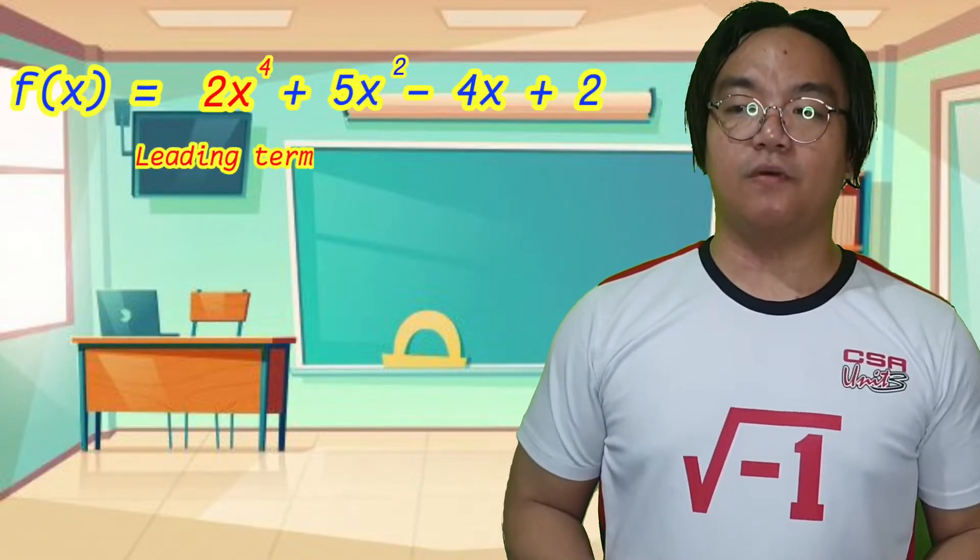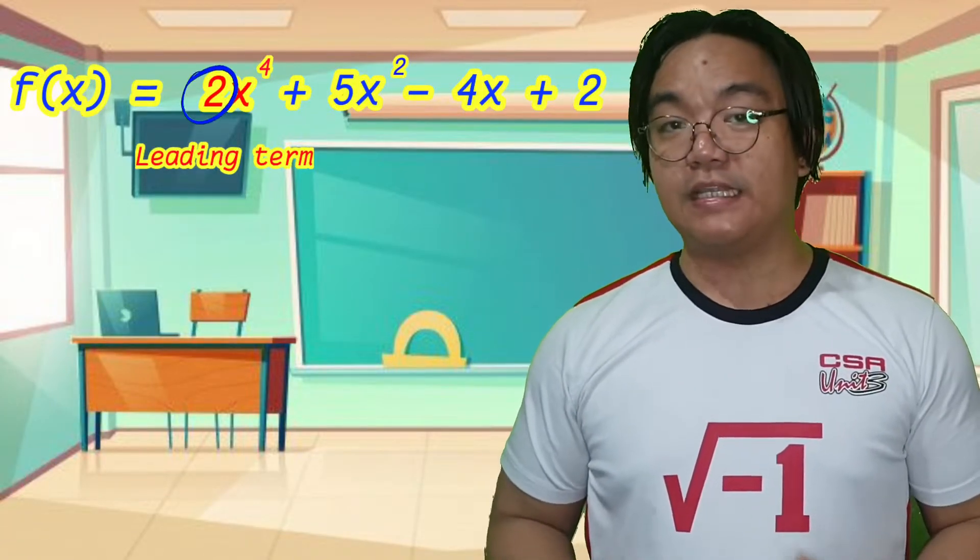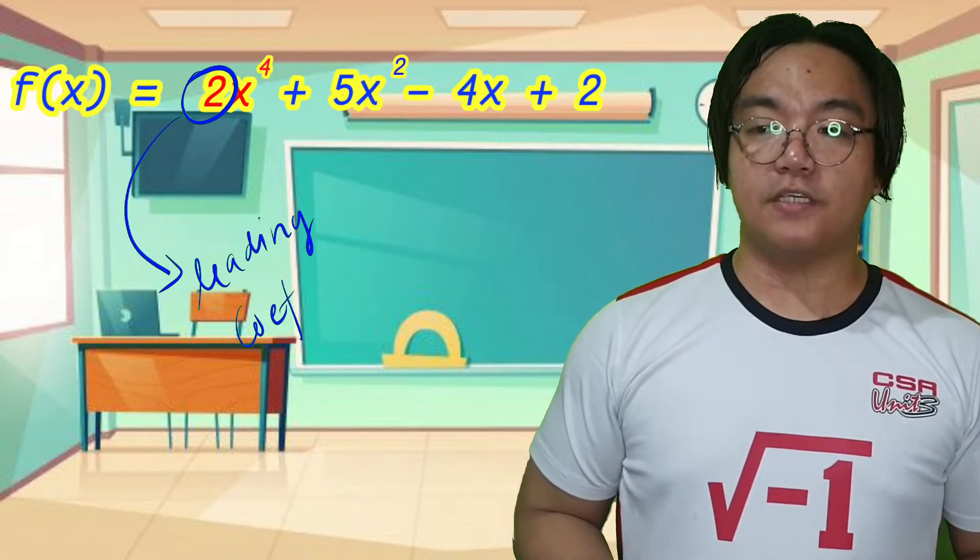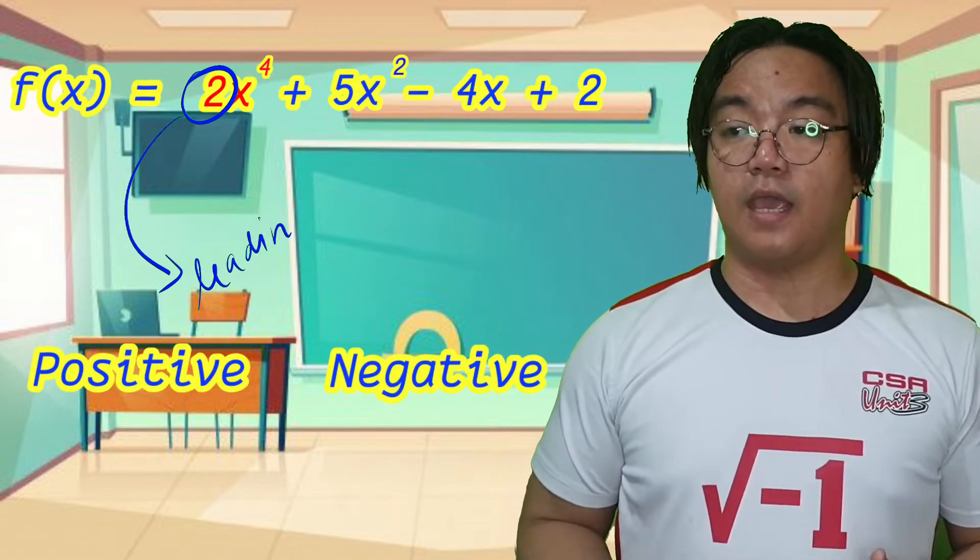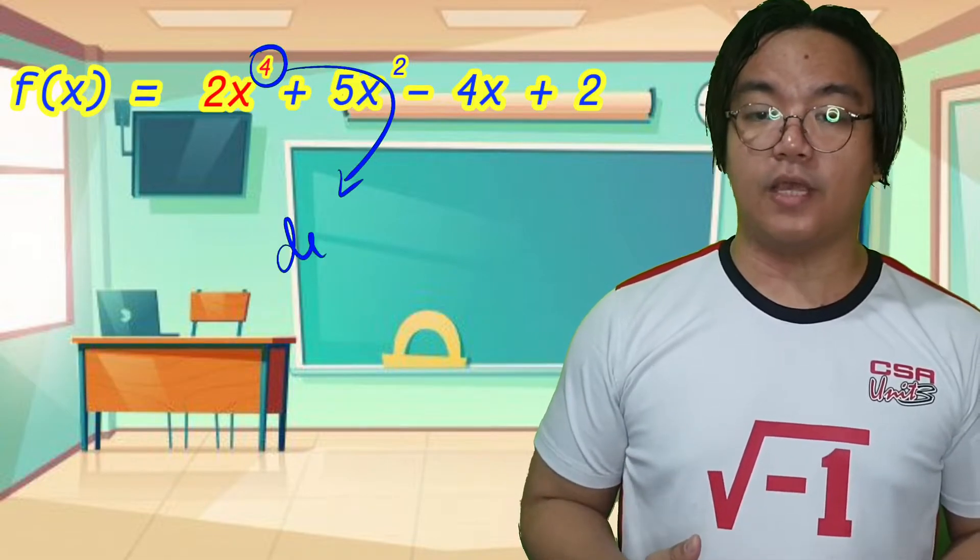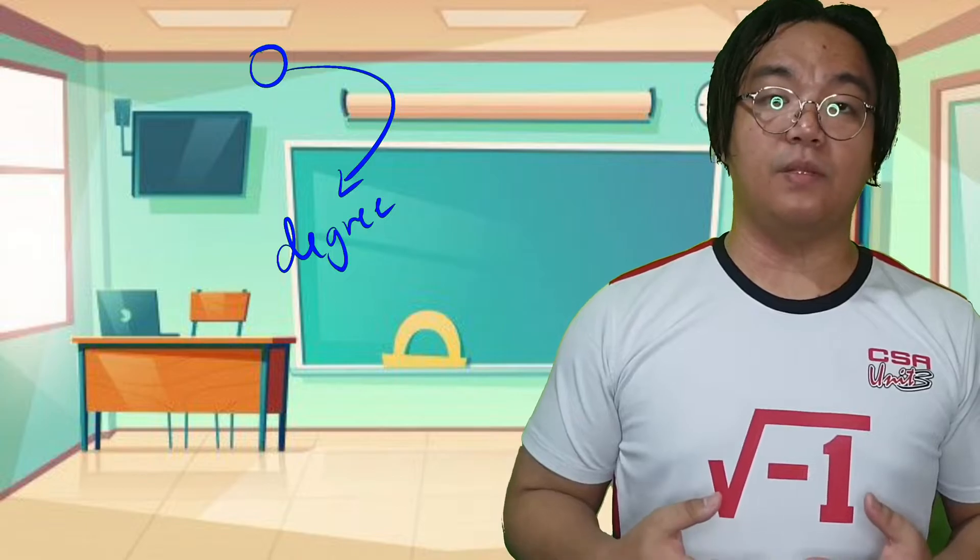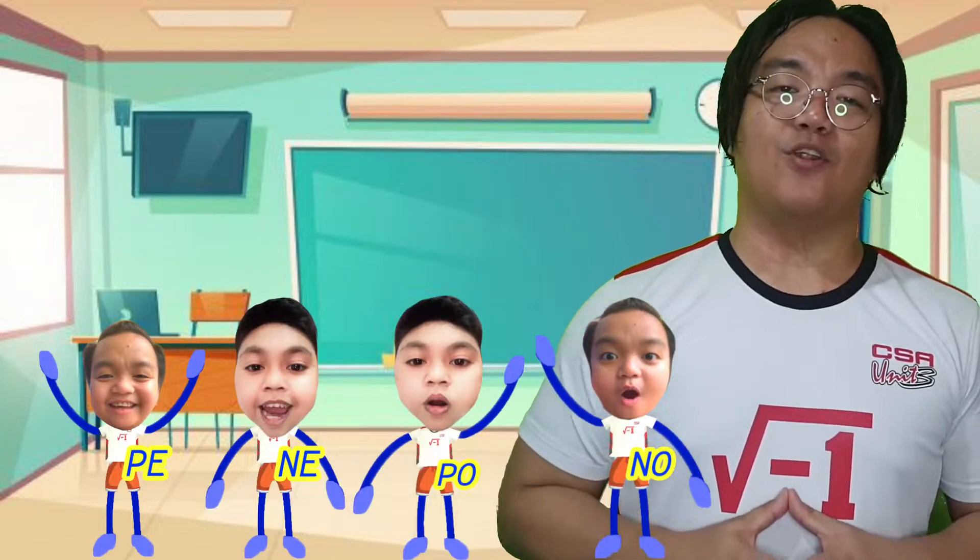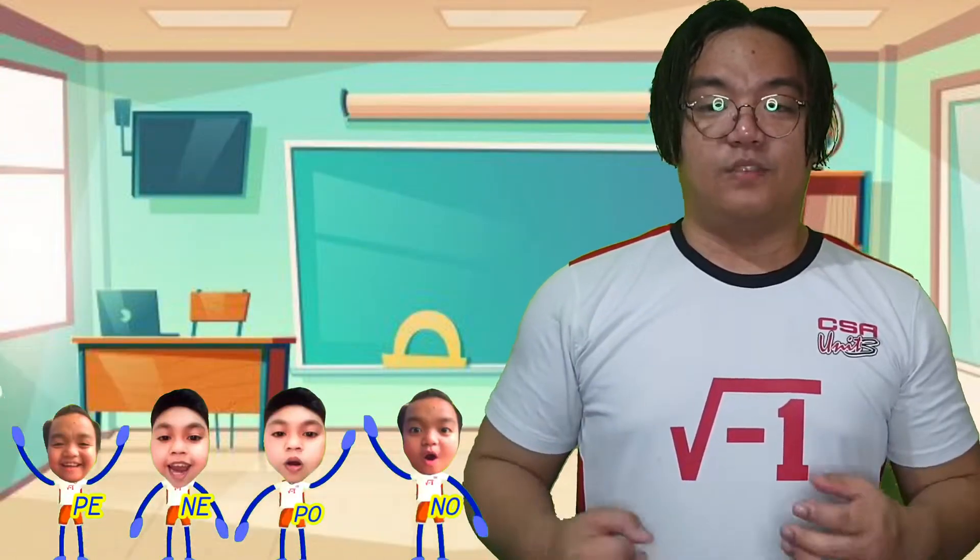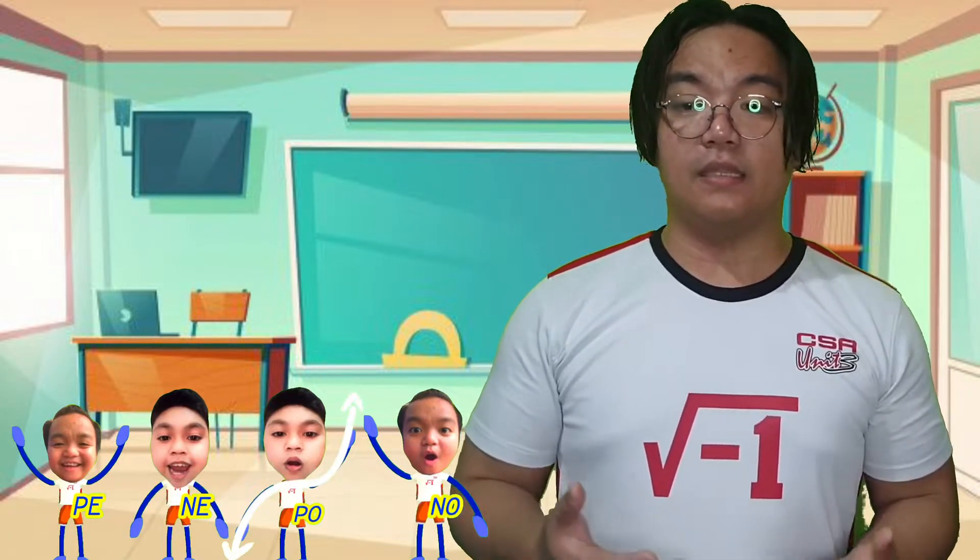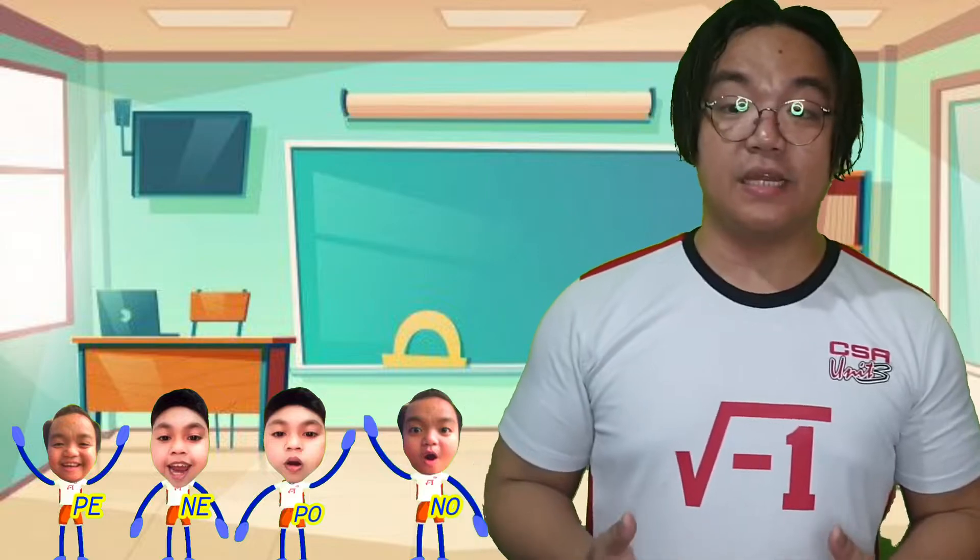We look at the leading term of a polynomial and focus on its leading coefficient and its exponent. Depending on the leading coefficient—whether it's positive or negative—and its degree (whether the exponent is even or odd), we know what the end behavior will be. That is where penepono comes in. The first letter talks about the leading coefficient, and the next letter is about its degree.